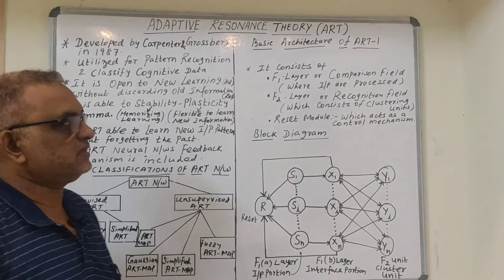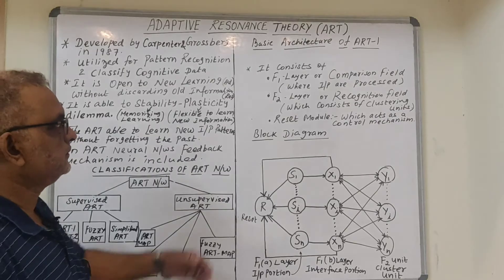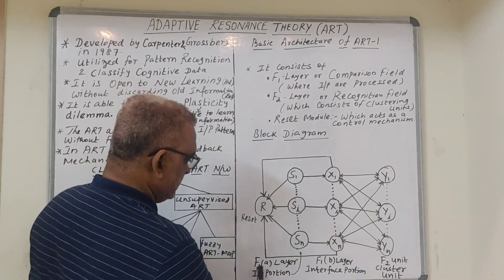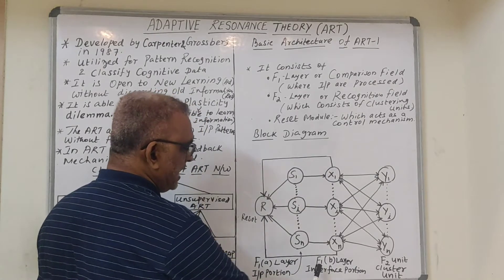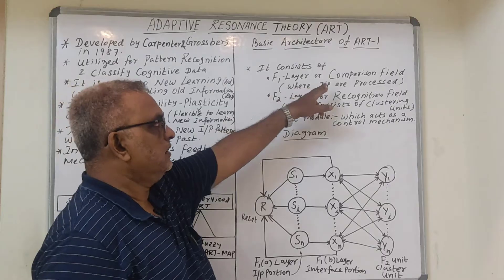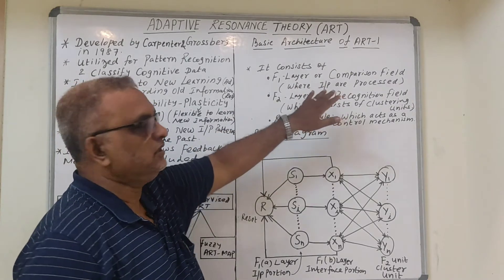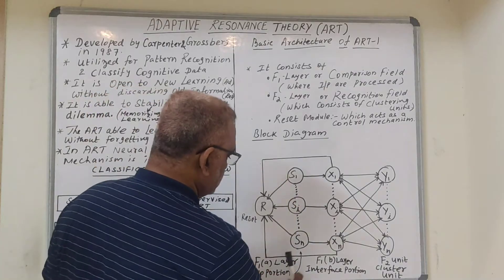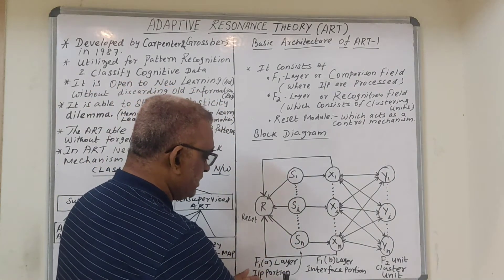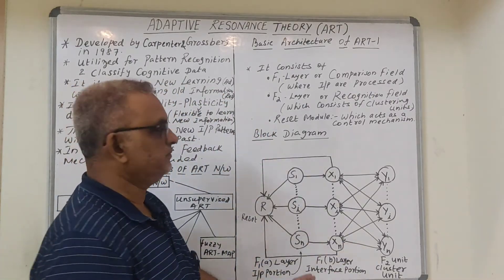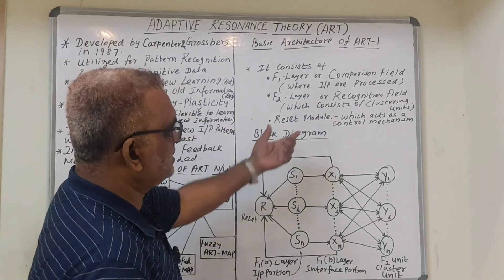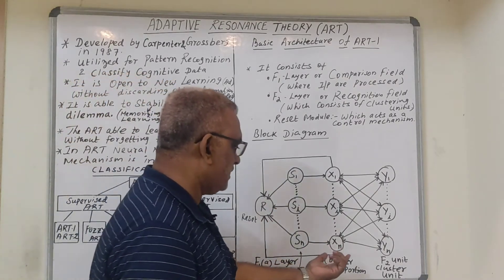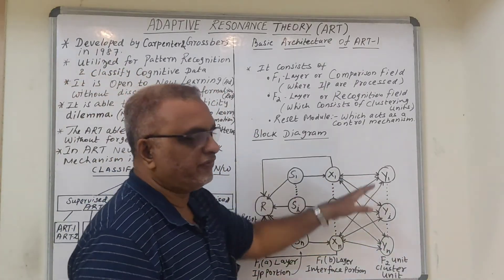The basic architecture of ART 1 mainly consists of two layers: F1 and F2. F1 itself is divided into two parts, F1A and F1B. The F1 layer is for processing the input patterns received, divided into an input portion and an interface portion. F2 is the recognition field, while F1 is the comparison field, and F2 consists of different clustering units.